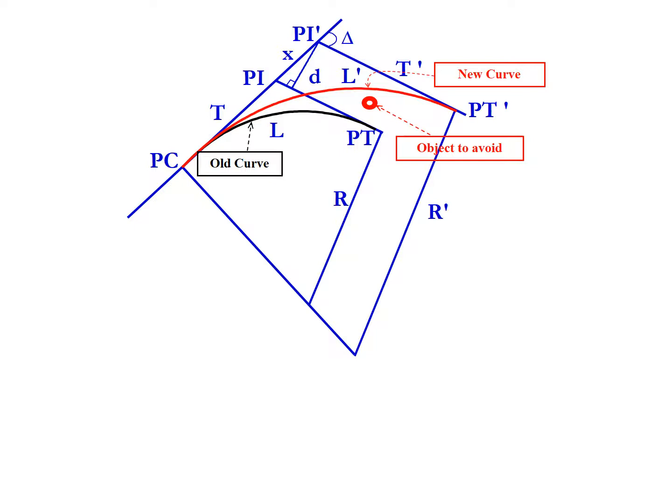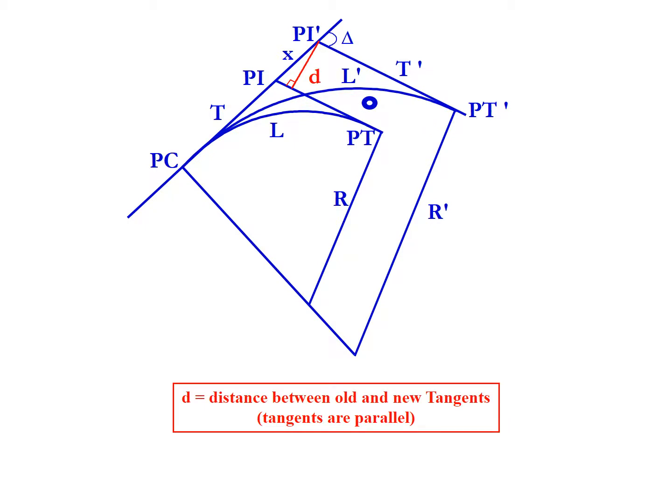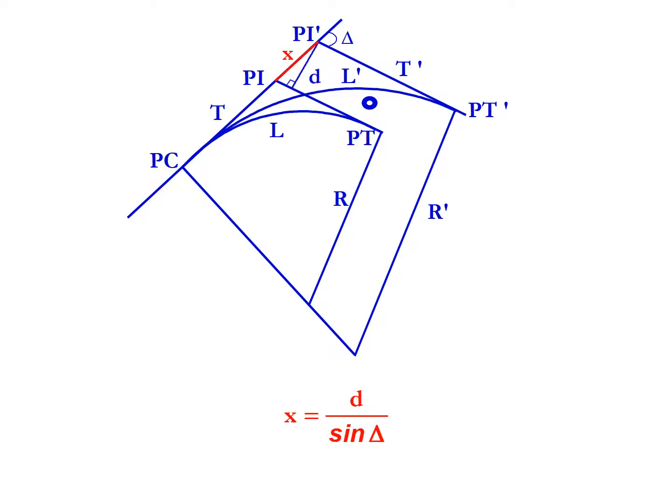d is the distance between the old and the new tangents, and again the tangents must be parallel for these assumptions to work. x is the distance along the tangent.